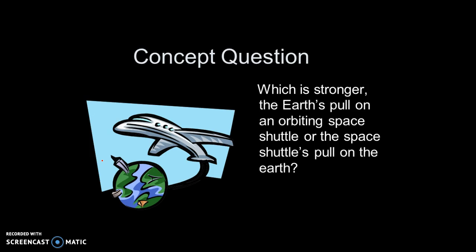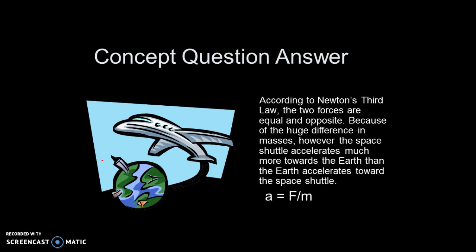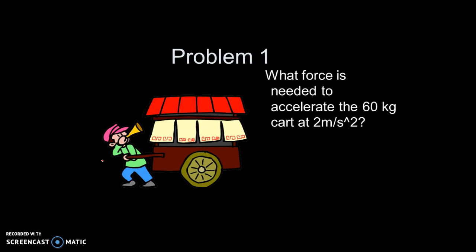Which is stronger, the Earth's pull on an orbiting shuttle or the space shuttle's pull on the Earth? Think about it. According to the law, they have equal and opposite forces. However, the space shuttle accelerates much more towards the Earth than the Earth accelerates towards the space shuttle.